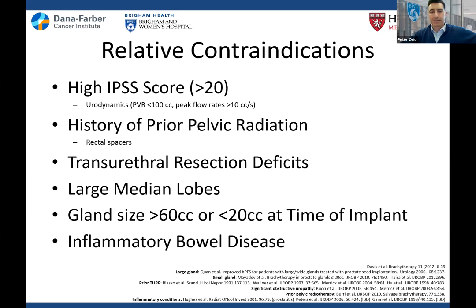Per the ABS guidelines, a high IPSS score greater than 20 is a relative contraindication, but that depends on how a patient fills things out. I like urodynamics — if they have a PVR less than 100 cc and a peak flow greater than 10 cc/sec, they'll do fine. Prior history of pelvic radiation is becoming less of an issue now that we have SpaceOAR to push the rectum out of the way. TURP deficits mean patients could urinate out seeds. Large median lobes may be associated with greater need to catheterize after implant.